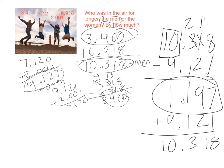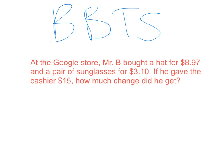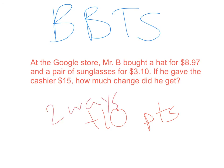You can see that was a multi-step problem: I had to add the two air times for the men, add the two for the women, and then subtract them from each other. Now the back-to-school problem: at the Google store, Mr. B bought a hat for $8.97 and a pair of sunglasses for $3.10. If he gave the cashier $15, how much change did he get? Think carefully about that $15 — that's your clue. There are actually two different ways you can solve this; if you solve it both ways, I will give you a 10-point bonus on the leaderboard.